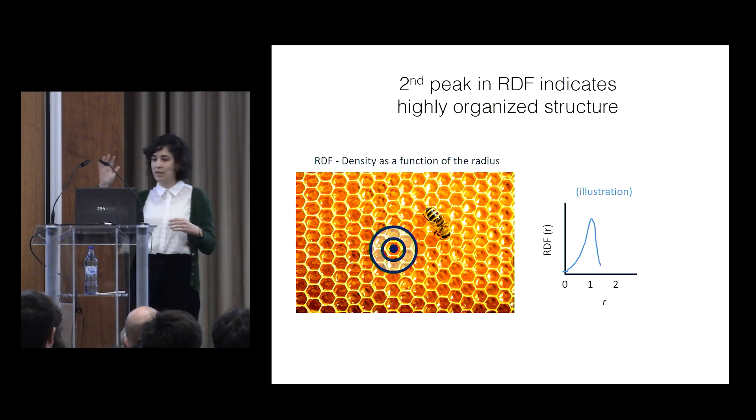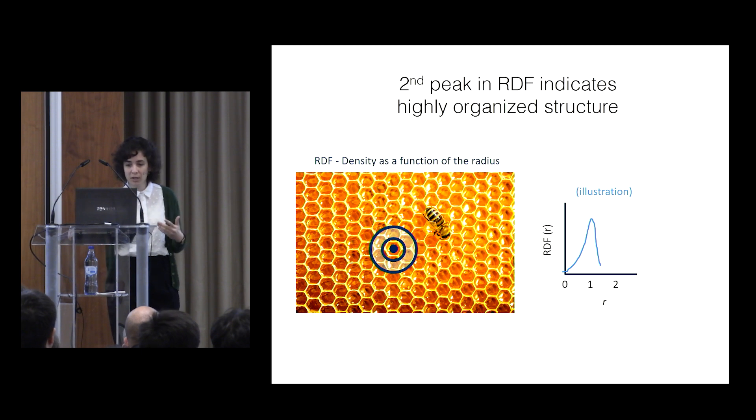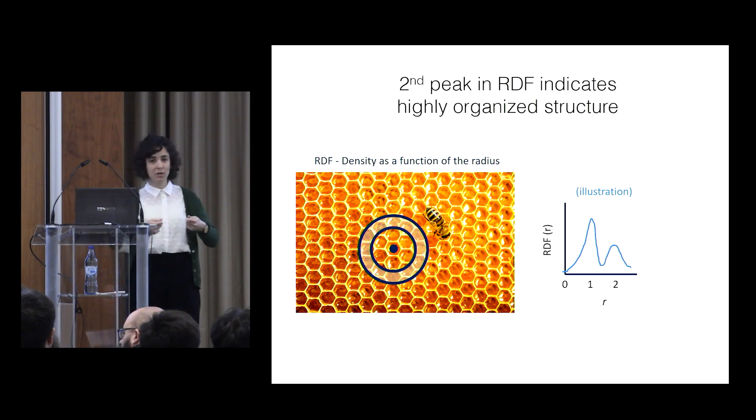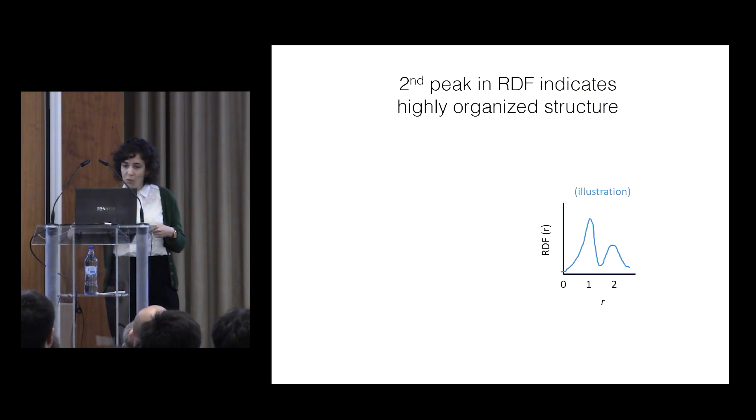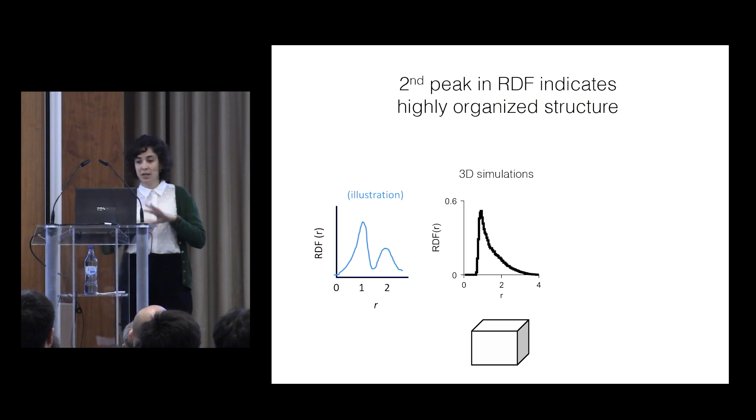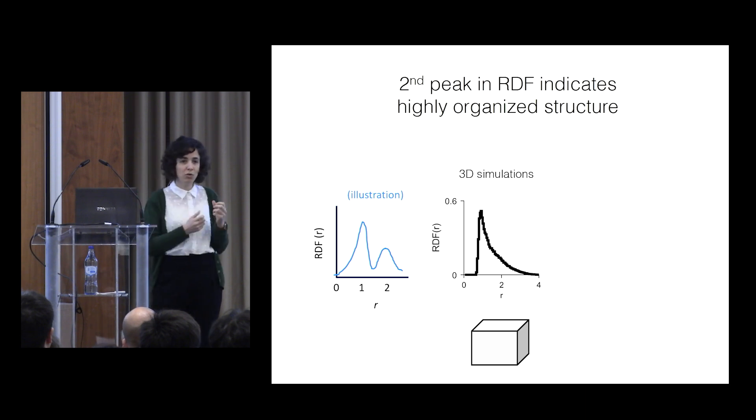However, only if we're in highly organized structures, we'll get another peak in the radius of the second nearest neighbor. And so we did simulations in 3D, in 3D volumes, and you can see that we have the first peak because there's the characteristic distance, but we don't have a second peak. It's not, there's only local order.